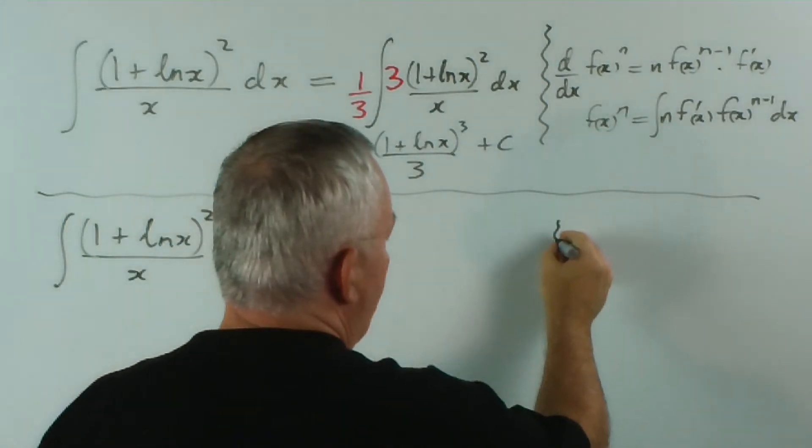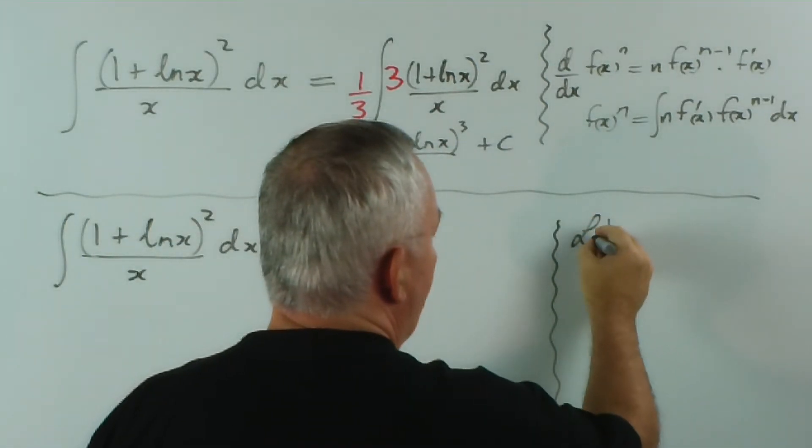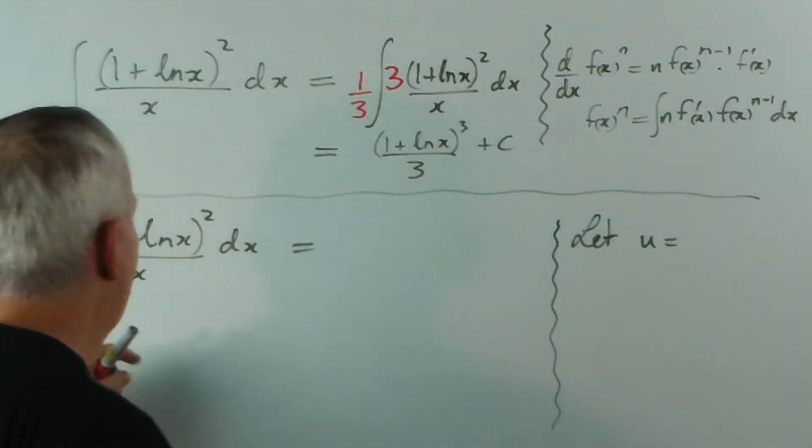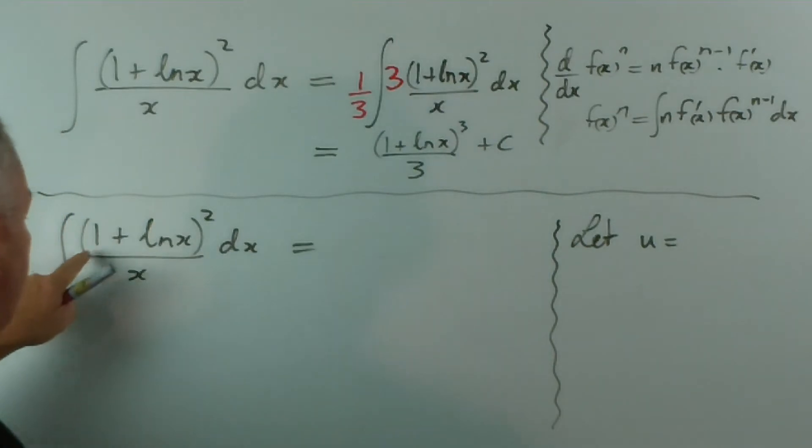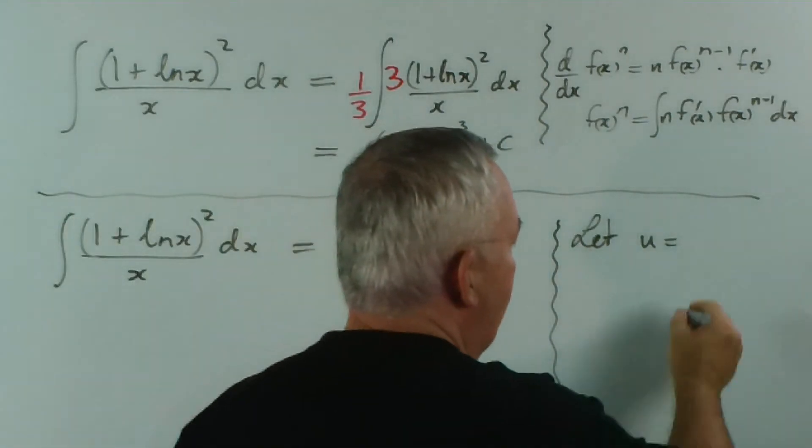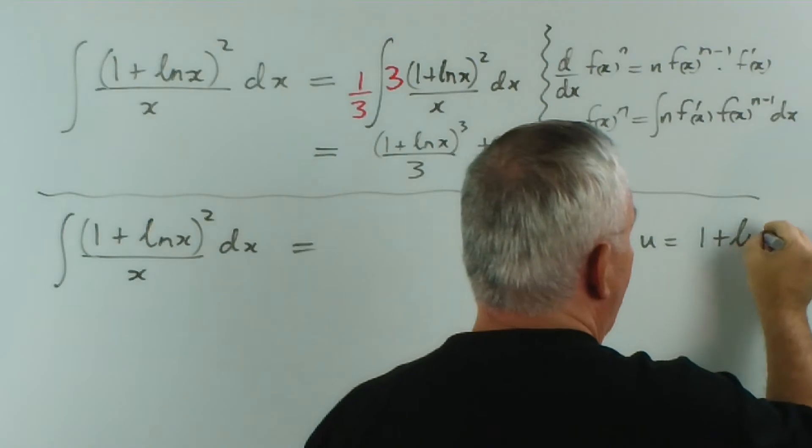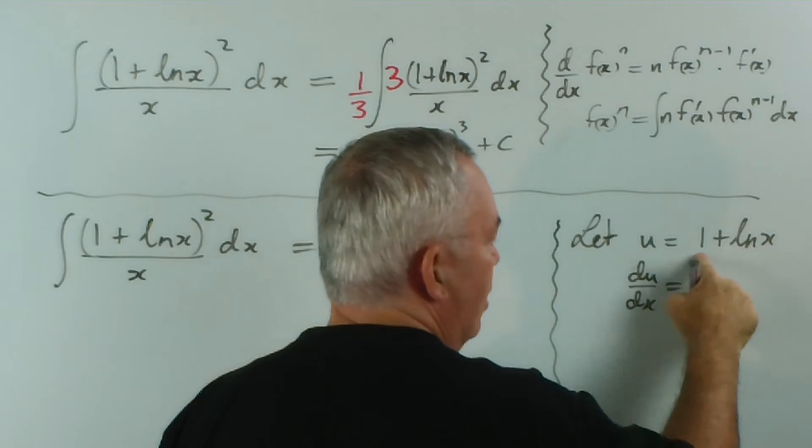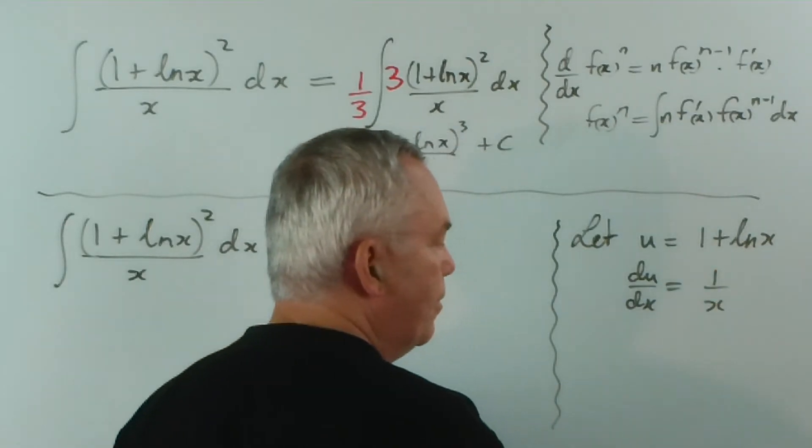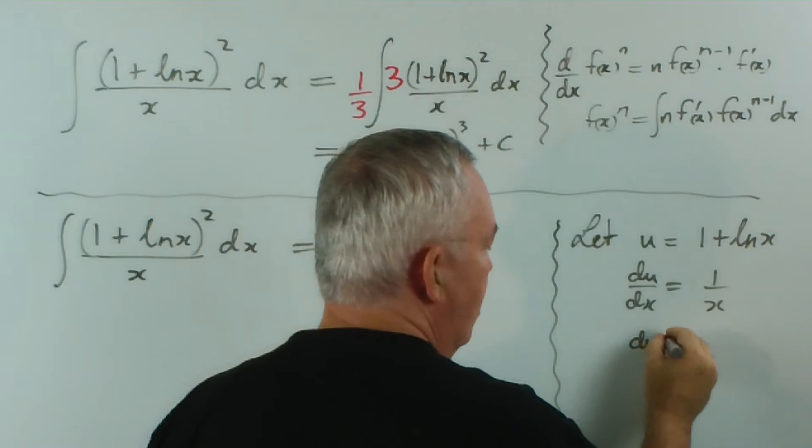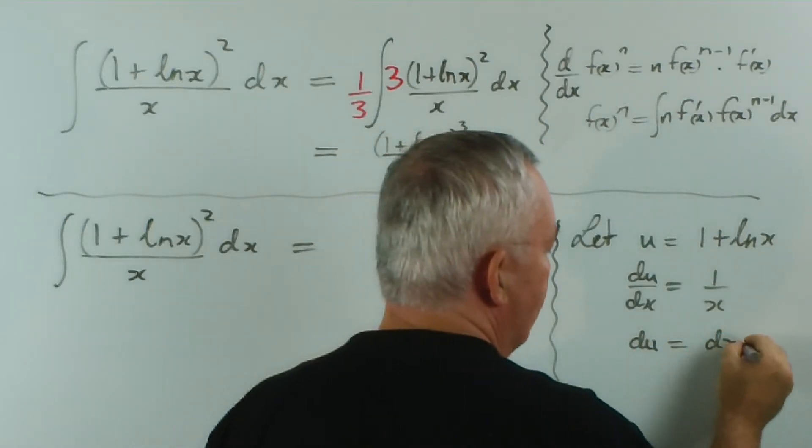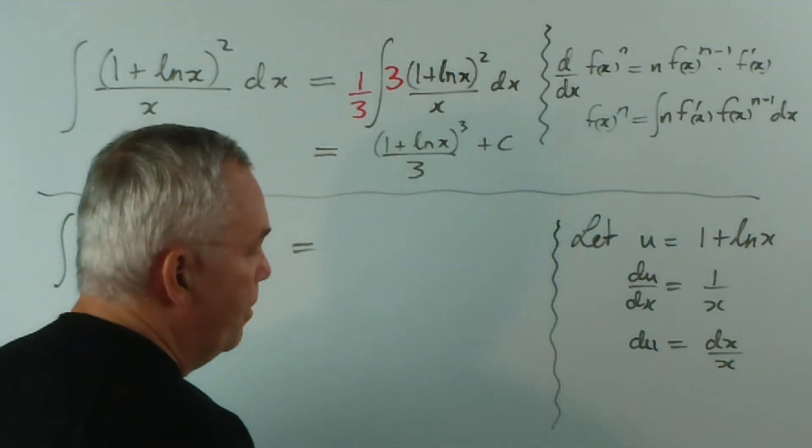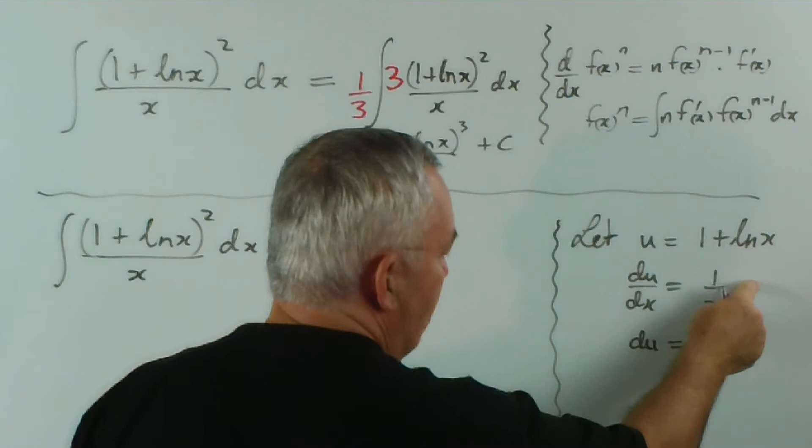So, here on the side, we would let some pronumeral—we often use the letter u—equal the complicated part of the expression, which in this case is on the top. It's the 1 plus log x. That means that du/dx—the derivative of this is 1 on x—which means that du equals dx on x, or 1 over x dx, whichever you prefer, just by moving the dx up here.